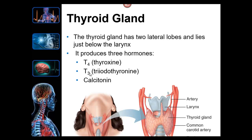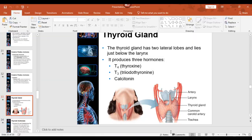Thyroxine requires four iodine atoms; triiodothyronine requires three. These two control metabolic rate and the development and maturation of the nervous system — those are the main two things they do. They also help with bone development.